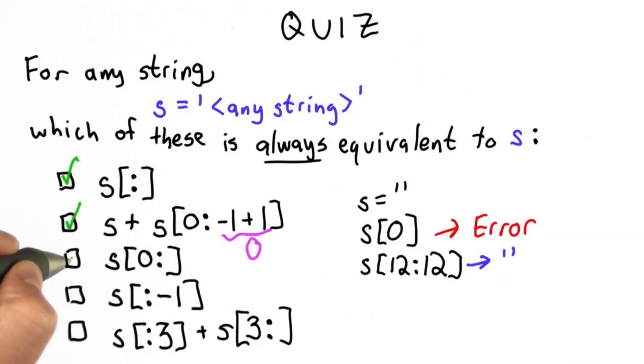So the third one is also always equivalent to s. It's selecting from the beginning of the string, position 0, all the way to the end. Again, as we saw here, even if s has no characters, this is still okay. It will give us the empty string. If s has any characters, it will give us all the characters in s.